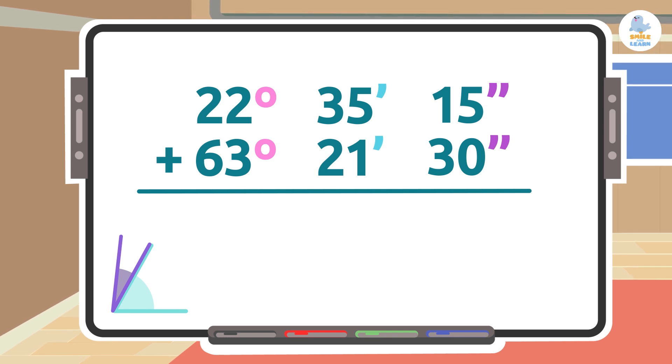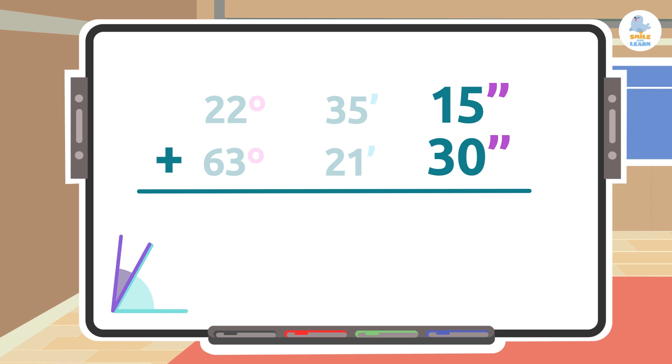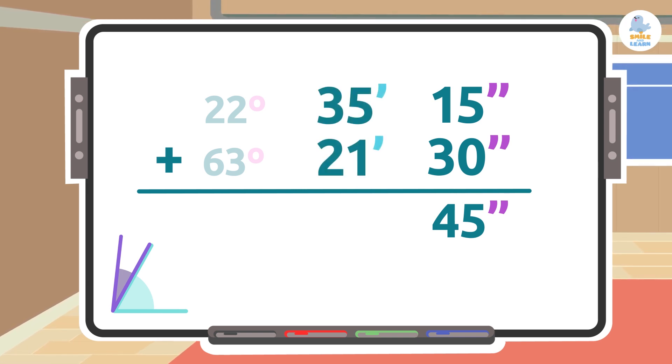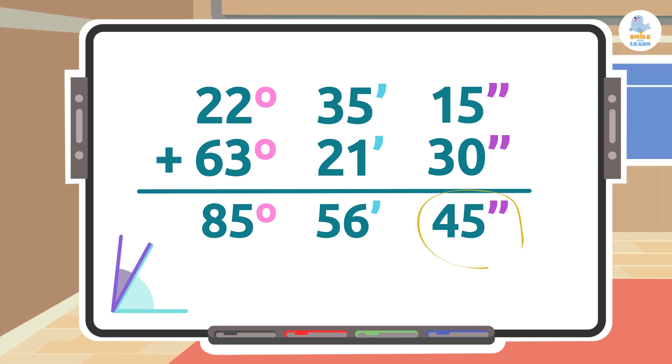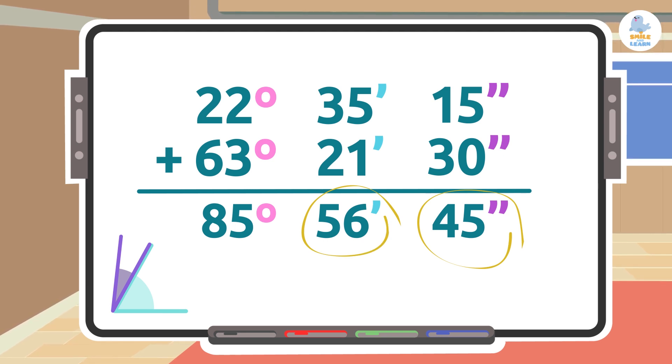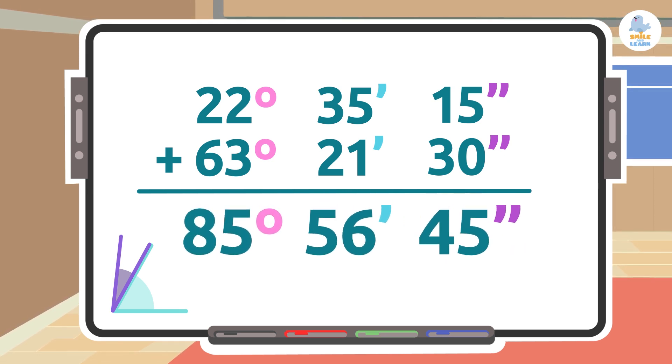Once we have placed the angles correctly, we have to add each column separately. We'll start by adding the seconds: 15 seconds plus 30 seconds is 45 seconds. Now we'll add the minutes: 35 minutes plus 21 minutes is 56 minutes. Lastly, we'll add the degrees: 22 degrees plus 63 degrees is 85 degrees. It's important to remember that the answers for the seconds and minutes columns must have a value between 0 and 59. In this case we already have the final result: 85 degrees, 56 minutes, and 45 seconds.